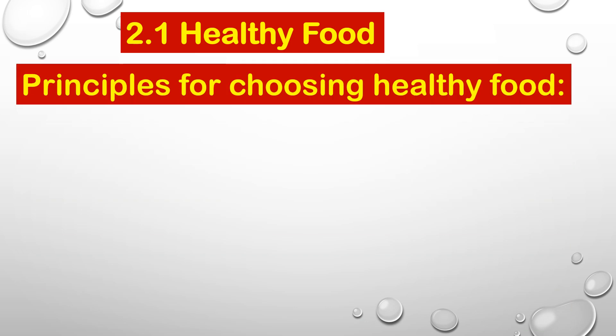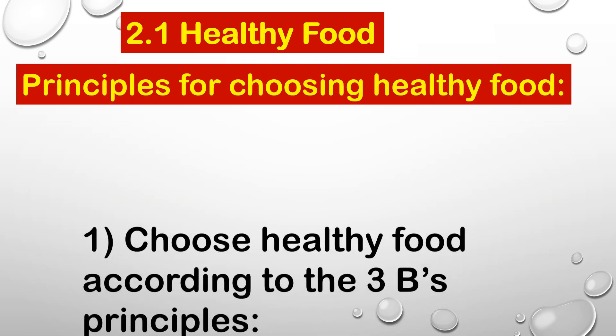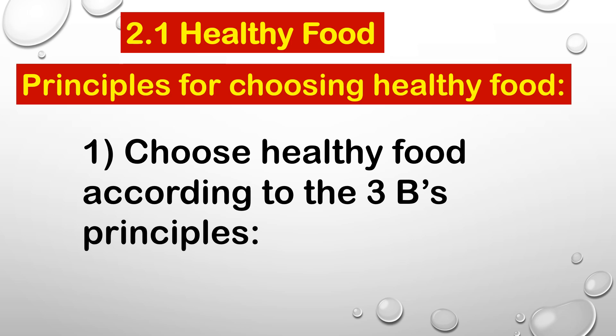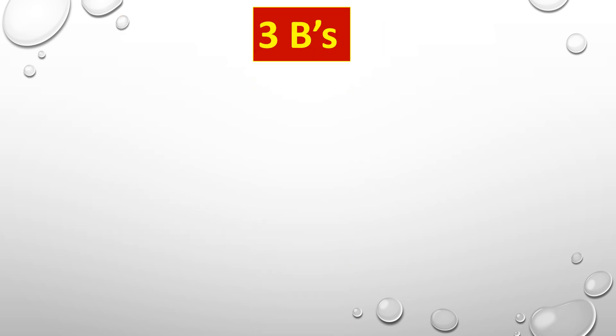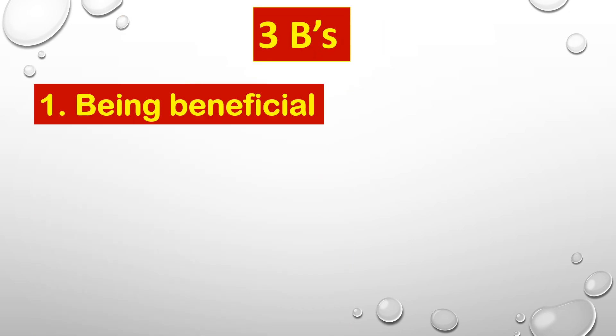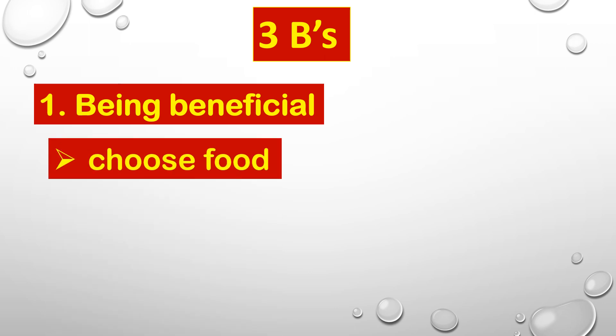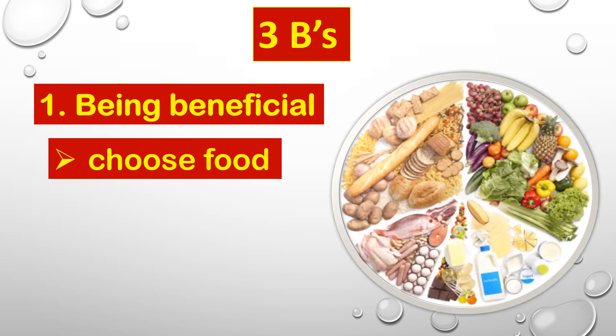We have principles for choosing healthy food. You need to choose healthy foods according to the three B's principles. The first B is being beneficial — choose food that has nutrients. These are examples of nutritious foods: fruits, vegetables, and dairies that have proteins.